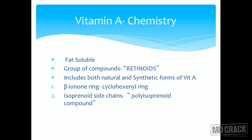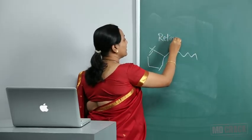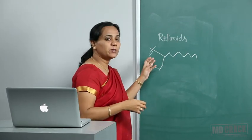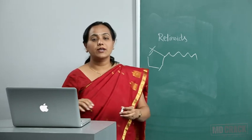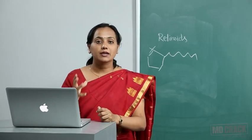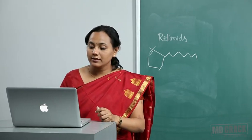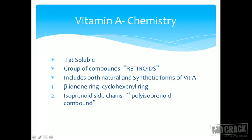Vitamin A is not a single compound — the group is collectively called retinoids. Retinoids include compounds that are nearly similar, differing by a double bond or cis/trans isomers. The characteristic structural feature is a beta-ionone ring (a cyclohexenyl ring) with an isoprenoid side chain. Retinoids include not only natural but also synthetic forms of vitamin A.